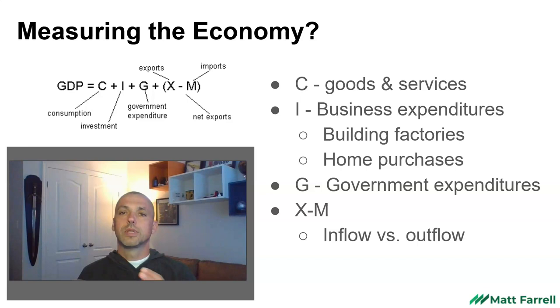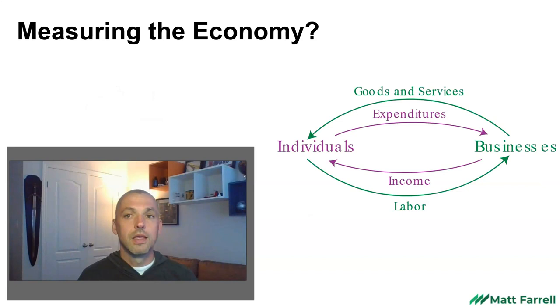So we get this equation of C plus I plus G plus X minus M, and that's how we derive GDP. When we break down the individual components, it does make more sense: the things people buy, the things businesses purchase, and the things the government does.